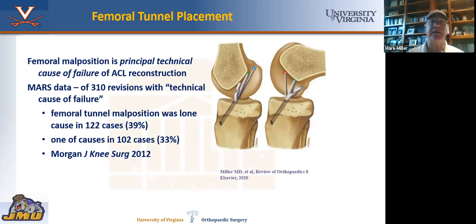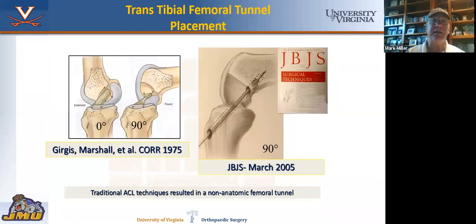One of the other technical considerations of ACL reconstruction is tunnel placement. The most common cause of failure is a femoral tunnel placed too anterior. This graphic shows nicely what happens if you don't place your tunnel in the correct location. The middle graft is the appropriate location and has isometricity in both extension and flexion. An anterior graft is loose in extension and tight in flexion — something you don't want. A posterior graft is tight in extension and loose in flexion. You want to get that happy medium.